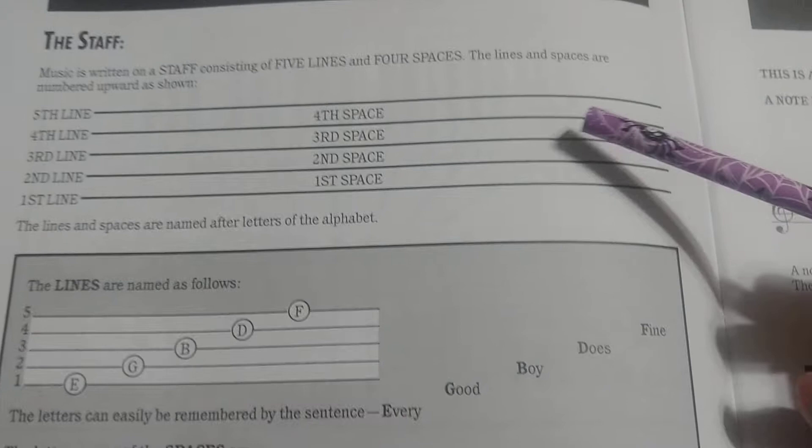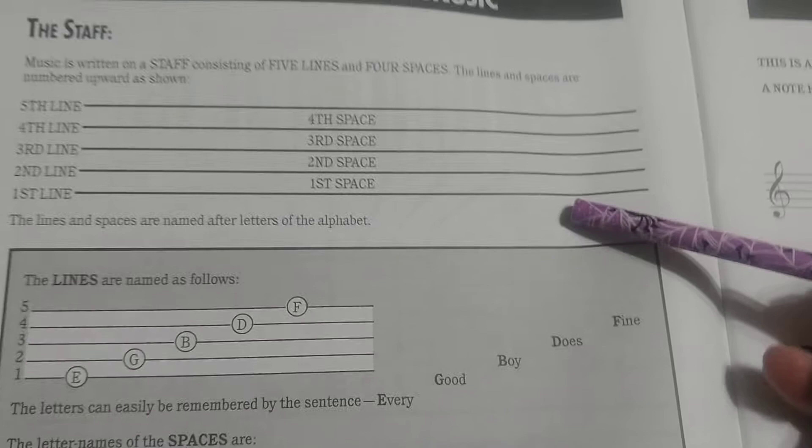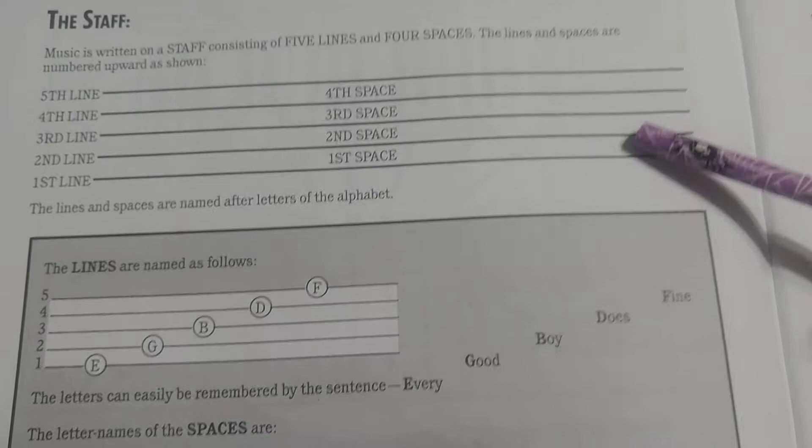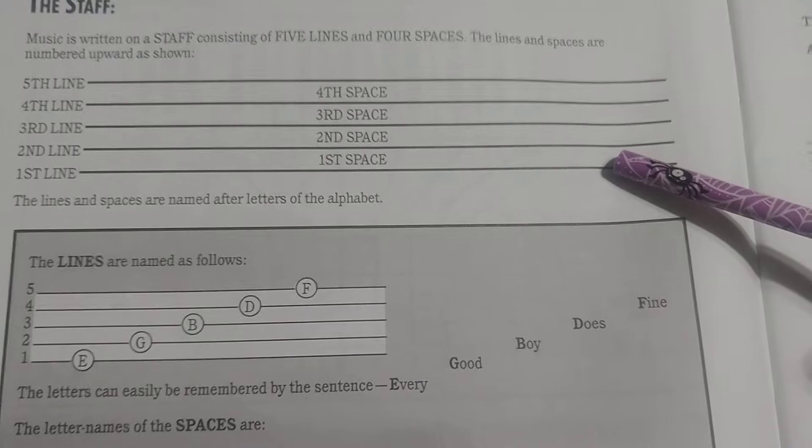Please keep in mind that the lines are not a direct representation of our strings. A lot of people mix that up and that will get you in trouble because it's not the same thing. These five lines and four spaces are going to represent different notes that we play on the fretboard. They will sometimes represent open strings, but more often will represent actual frets that we press down.